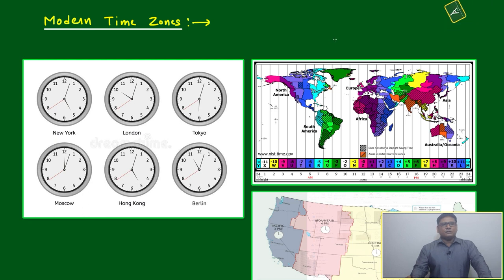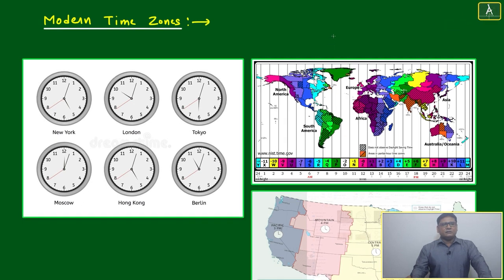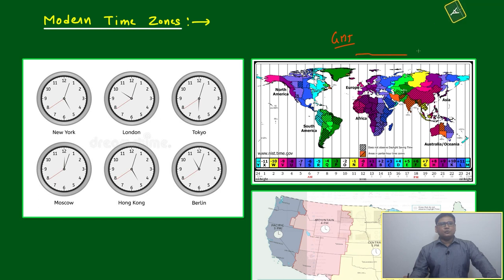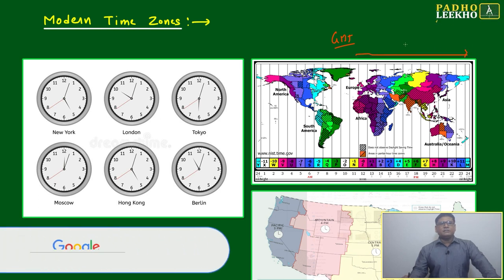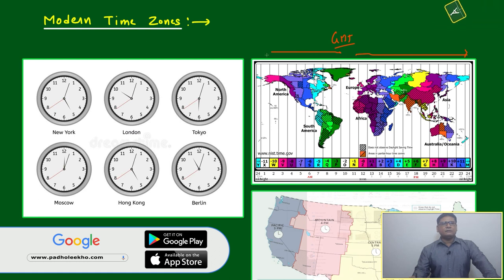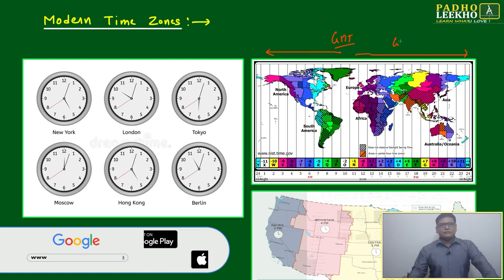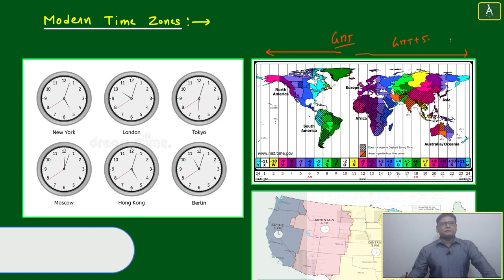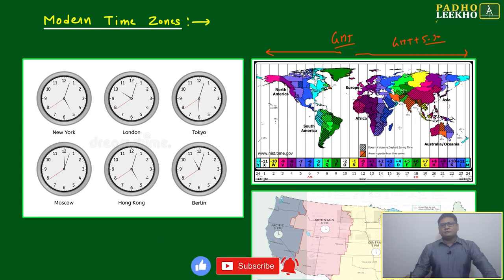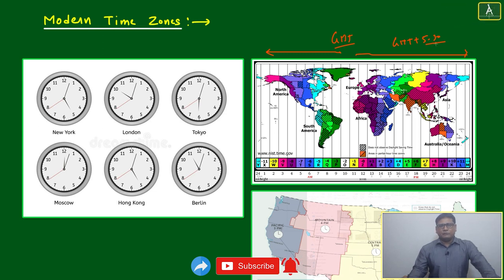Generally we use GMT. Coming from London toward Japan, it will be GMT plus, and the other side will be GMT minus. India falls at GMT plus five and a half hours.